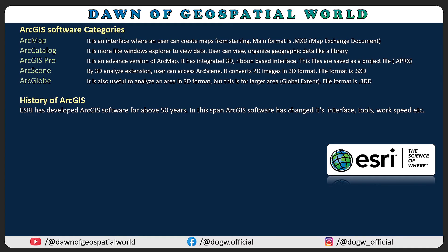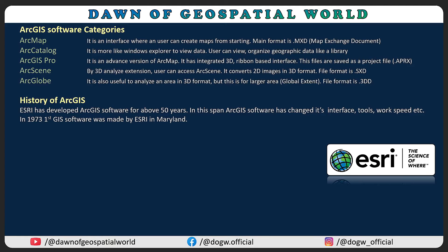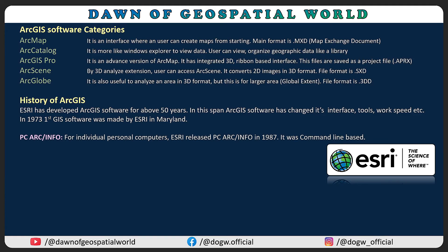ESRI has developed ArcGIS software for over 50 years. In this span, ArcGIS software has changed its interface, tools, and workspace. In 1973, the first GIS software was made by ESRI in Maryland. For individual personal computers, ESRI released PC Arc/Info in 1987, which was command-line based.